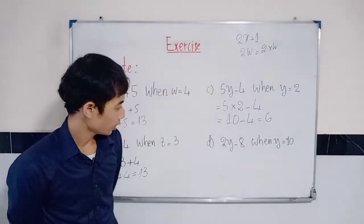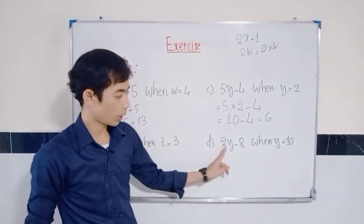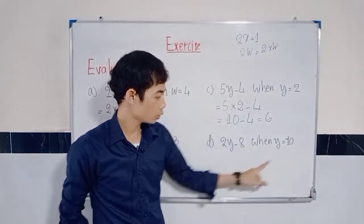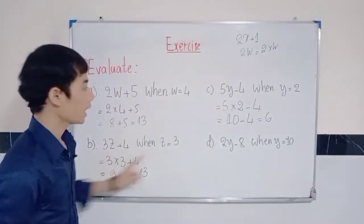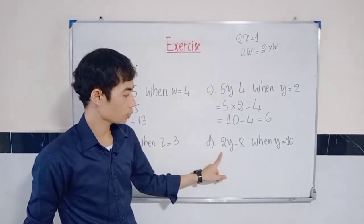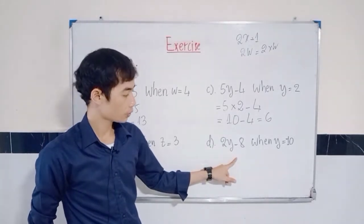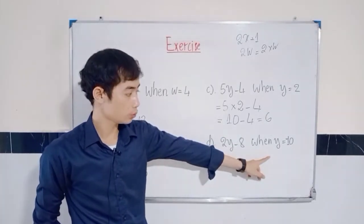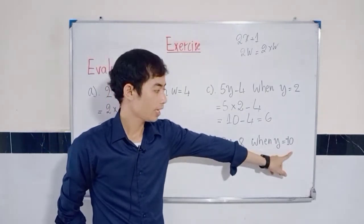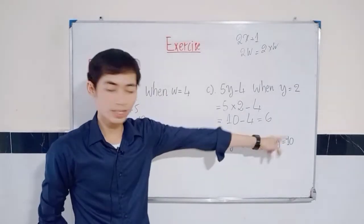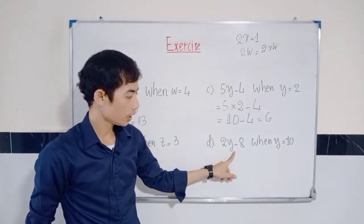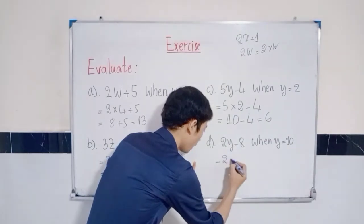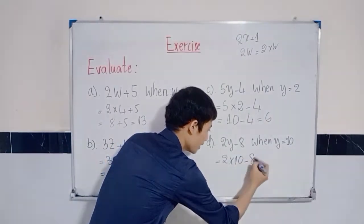And the last one. We have the expression 2y minus 8 when y is equal to 10. How to do is the same. If you understand letter A, B and C, you also understand letter D. First, you need to understand how to substitute the value. When y is equal to 10, you can use 10 instead of y. And 2y means 2 times y. So, you can say 2 times 10 minus 8.